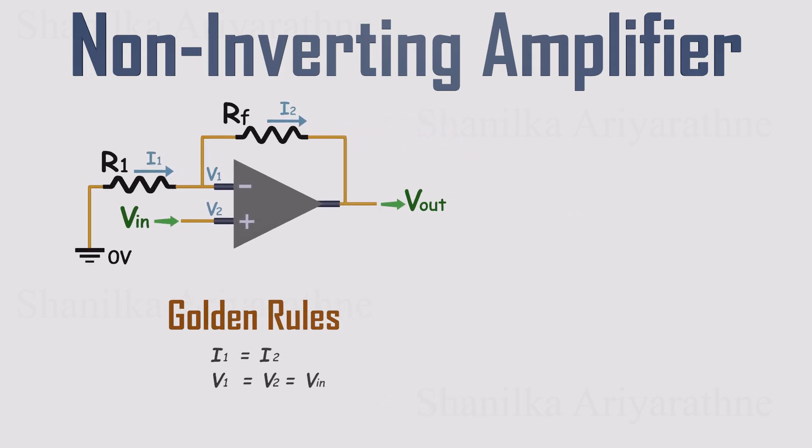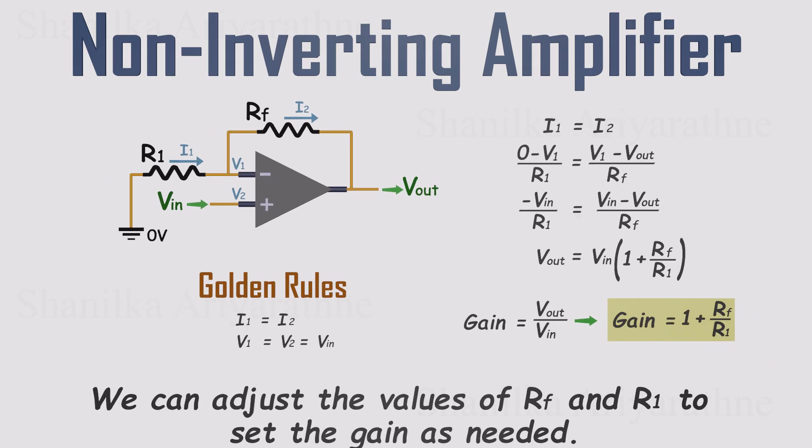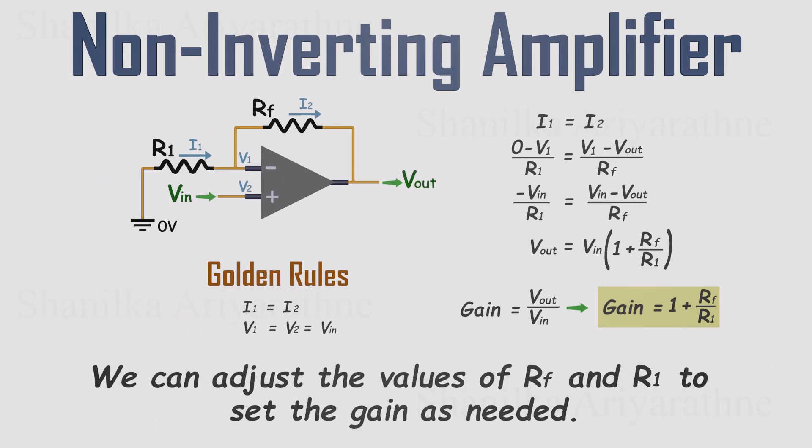That makes the math pretty straightforward. The current through R1 equals the current through Rf. And using Ohm's law, current is voltage divided by resistance. The voltage across R1 is 0 minus V1, and the voltage across Rf is V1 minus Vout. But from golden rule 2, we know V1 equals Vin. Rearranging gives us Vout equals Vin multiplied by 1 plus Rf over R1. So the gain of a non-inverting amplifier is 1 plus Rf over R1. And just like before, we can adjust R1 and Rf to set the gain to whatever we need. Pretty neat, right?